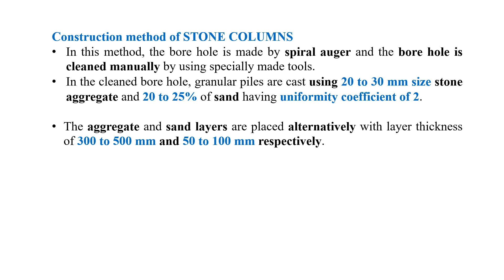The aggregate and sand layers are placed alternatively. For the construction of a stone column, first we put the aggregate, and above that we put the layers of sand alternatively, with layer thickness varying from 300 to 500 mm and 50 to 100 mm respectively. That means the aggregate layer will vary from 30 cm to 50 cm, whereas the sand layer above the aggregate will vary from 5 to 10 cm.